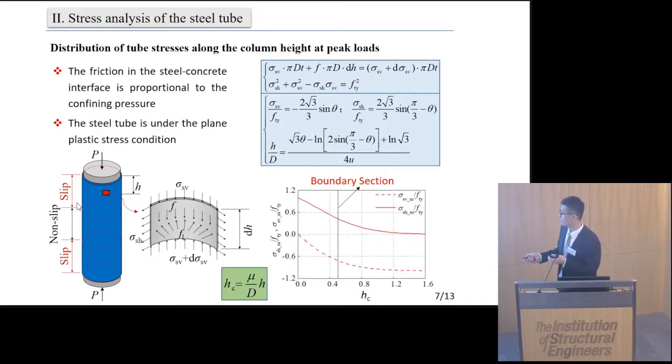Here, this figure shows the relationship between the tube stress and the variable hc. hc can be calculated by μ times 2D multiplied by h, where μ is the frictional factor between the steel tube and the concrete, D is the diameter of the steel tube, and h is the distance from the starting section to the end section.